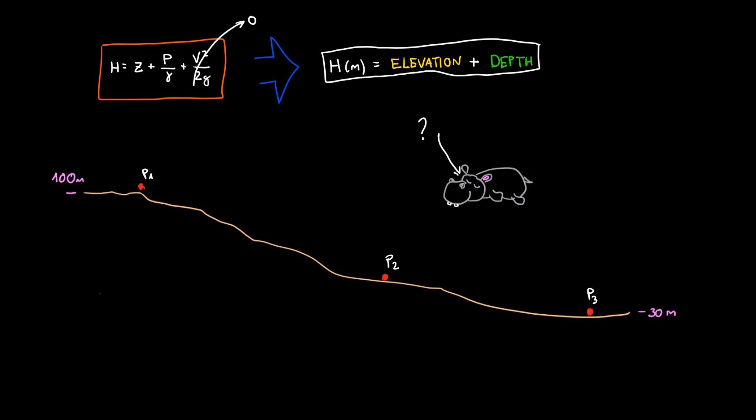Now let's remove the water from the hippo pool and lay a pipe connecting points one, two, and three following the terrain. How does the head change? It doesn't. It's exactly the same thing. The key thing to note here is that the column of water doesn't have to be on top of the point. When water is in a pipe, the forces will transmit along following the pipe.